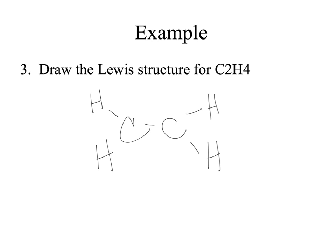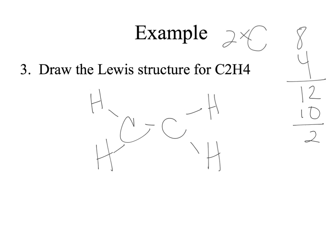Now we'll count up our electrons. Two carbons, each with four, gives us eight valence electrons. Four hydrogens gives us four. So we have a total of twelve valence electrons. We've distributed ten so far, leaving us with two.